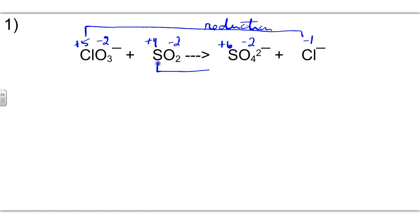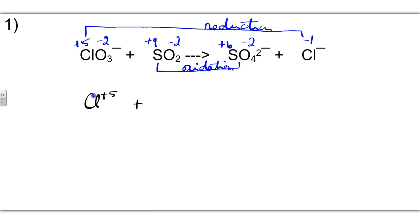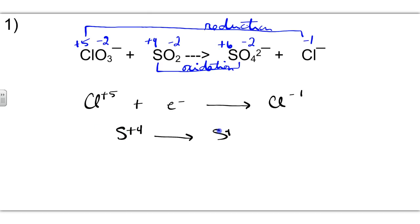Sulfur goes from plus four up to plus six, which is an oxidation. We write our half-reactions: for the reduction, Cl⁺⁵ plus some electrons yields Cl⁻¹. For the oxidation, S⁺⁴ yields S⁺⁶ plus some electrons. The electrons always accompany the species with the higher oxidation state. From plus five down to minus one is a transfer of six electrons, and from plus four to plus six is a transfer of two electrons.